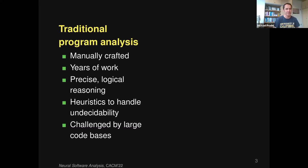Traditional program analyses work by using precise and logical reasoning — everything is written down using logical rules. But typically this doesn't suffice to get an effective analysis. In addition, traditional program analysis needs a lot of heuristics to handle the inherent undecidability of basically every program analysis problem. Another property is that they are usually challenged by large code bases and often don't scale very well.